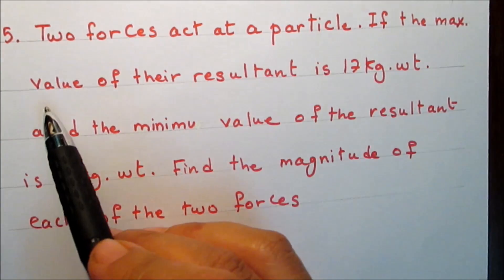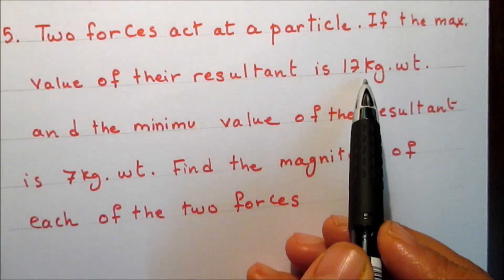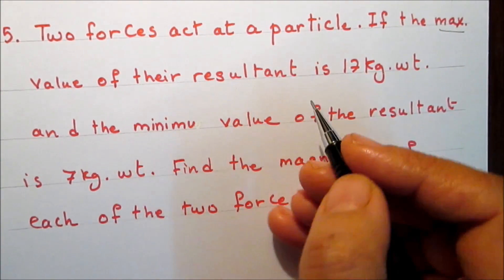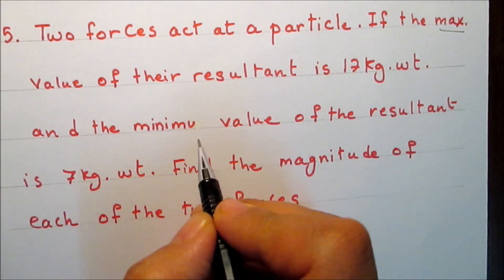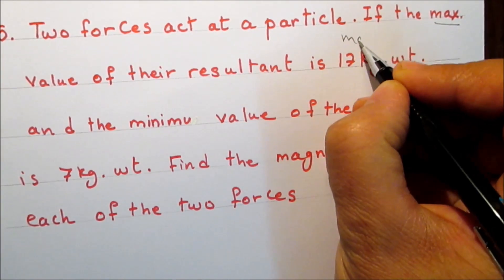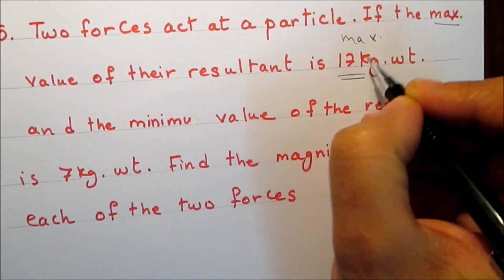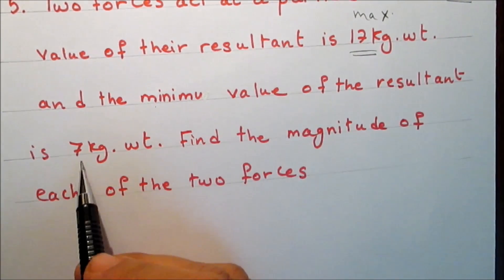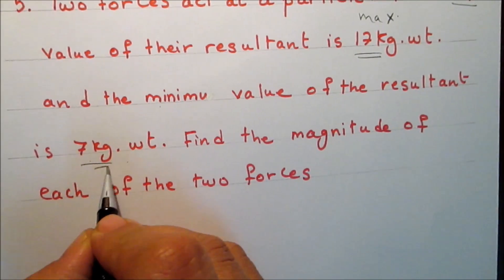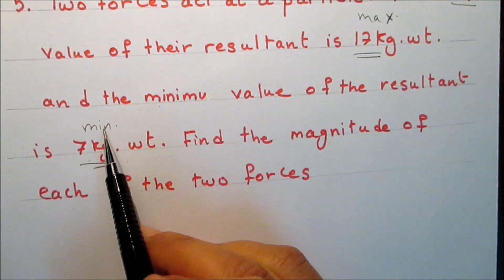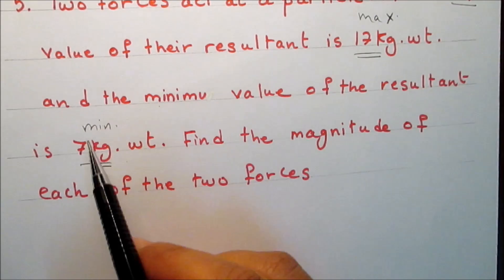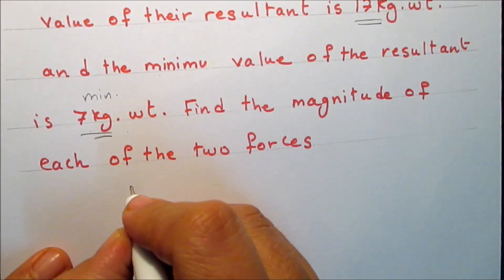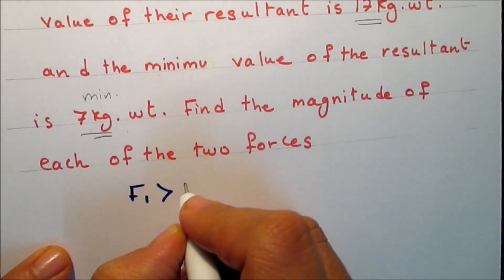Two forces act at a particle. If the maximum value of the resultant is 17 kg-weight and the minimum value of the resultant is 7 kg-weight, find the magnitude of each of the two forces. Assume that F1 is greater than F2.